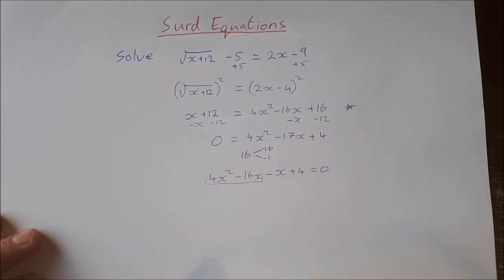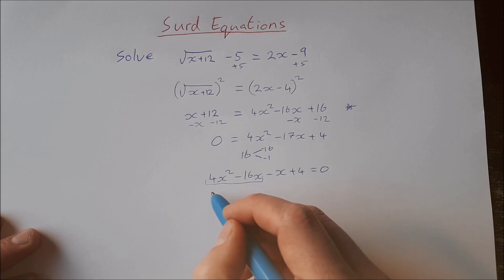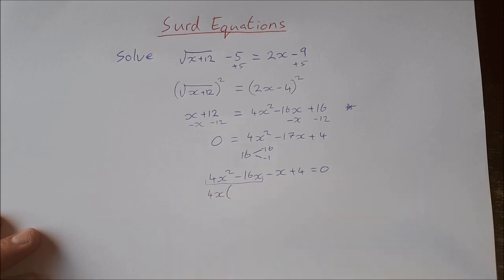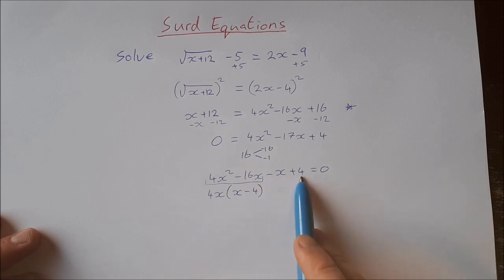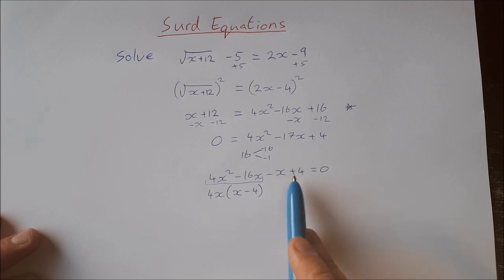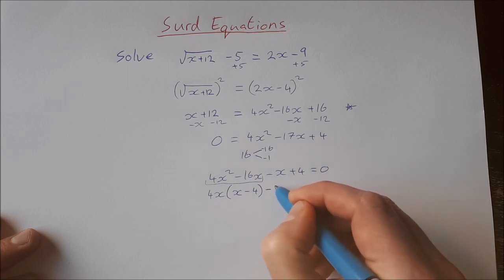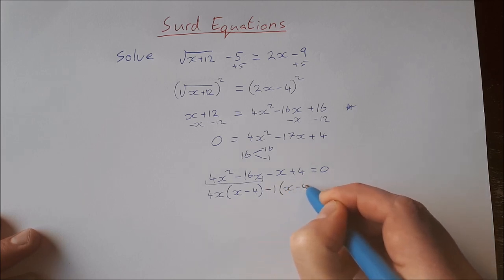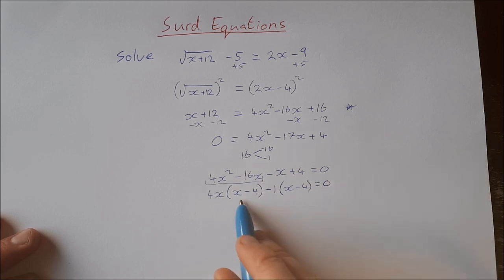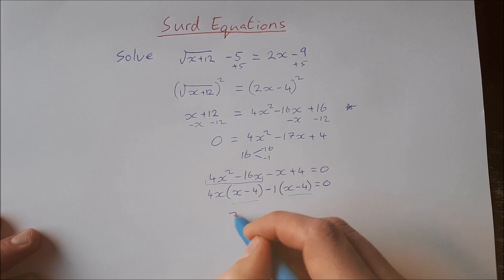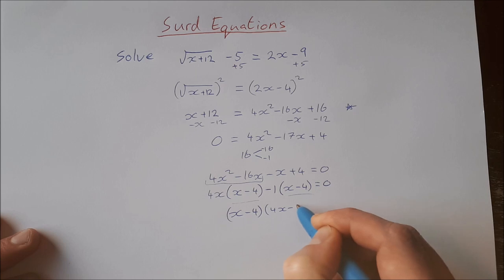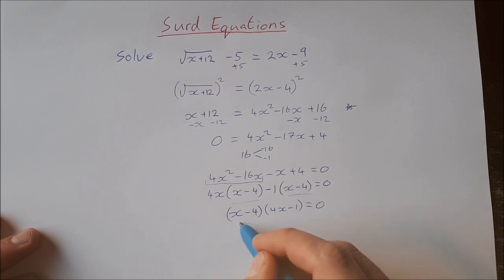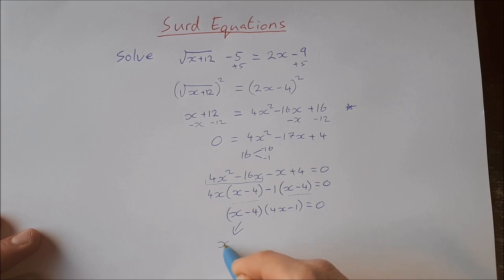So I'll rewrite the equation as 4x squared minus 16x minus x plus 4, equal to zero. With the guide number method, take the first two terms — the highest common factor is 4x, giving x minus 4 inside the brackets. For the last two terms, I'll take out minus 1 so that I also get x minus 4 inside the brackets: minus 1 times x minus 4, equal to zero.